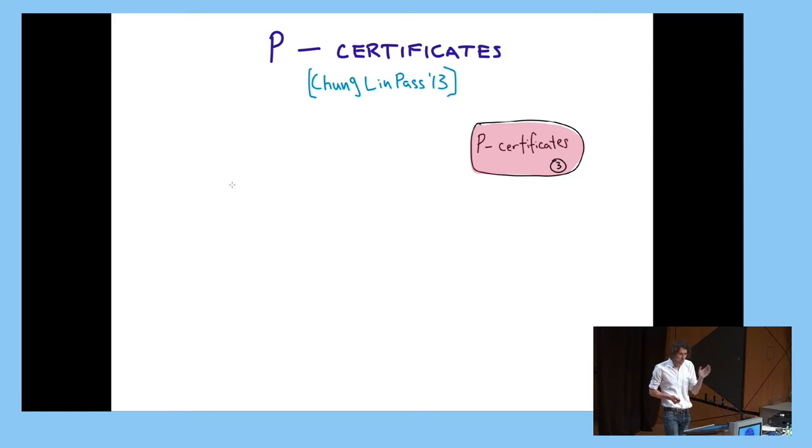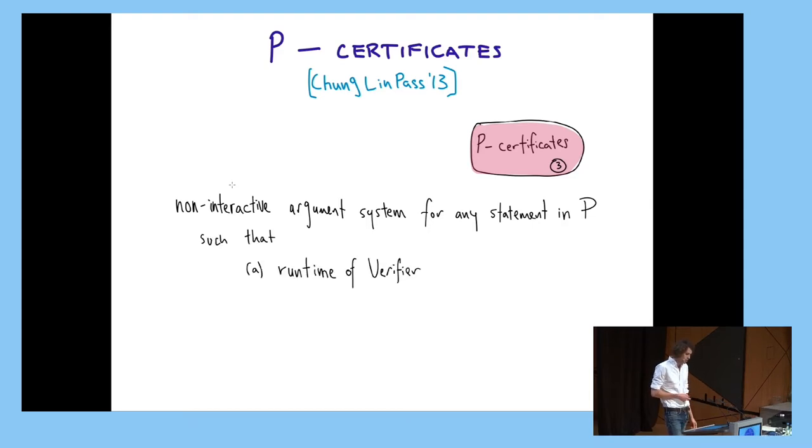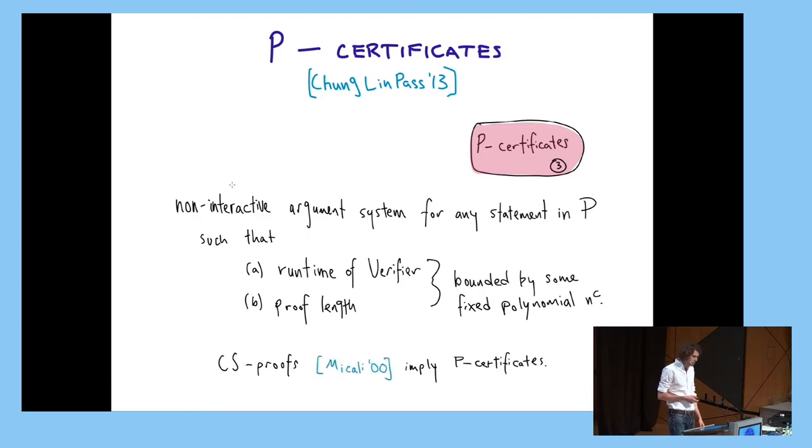P-certificates. What is a P-certificate? I'm assuming not all of you know what this is. It's a non-interactive argument system for any statement in P, such that the runtime of the verifier and the proof length are bounded by some fixed polynomial, independent of the language which you're proving some statement about. CS proofs imply P-certificates. The key thing here, though, is P-certificates are a falsifiable assumption.